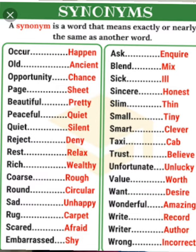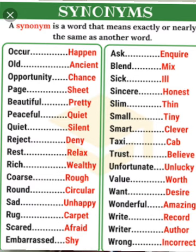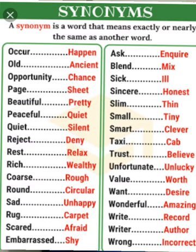Next is page — P-A-G-E — its synonym is sheet, S-H-E-E-T. Next is beautiful — B-E-A-U-T-I-F-U-L — its synonym is pretty, P-R-E-T-T-Y. Next is peaceful — P-E-A-C-E-F-U-L — peaceful means quiet. Quiet also means silent, so peaceful, quiet, and silent are three words with the same meaning. For peaceful you can write quiet or silent. Sometimes it depends on the options given; if one word is given in the option you go with that word, otherwise you can write any one.